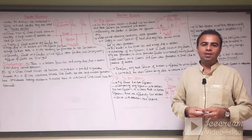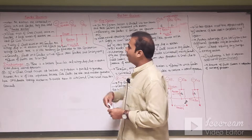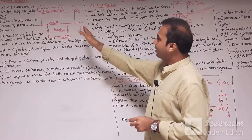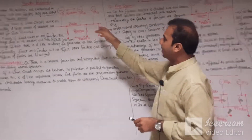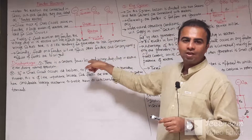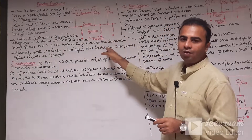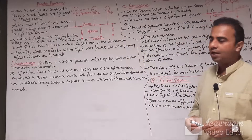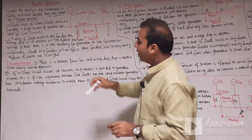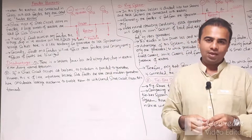Now there is another type of reactor called the feeder reactor. In this system, when the reactors are connected in series with each feeder, that will be called a feeder reactor. As you can see in the diagram, there are three types of generators supplying electrical power to the bus bar, and particular feeders are supplied by each particular generator. For example, G1 supplies feeder 1, G2 supplies its particular feeder, and G3 supplies its particular feeder. The reactor connected in series with a particular feeder is called the feeder reactor.